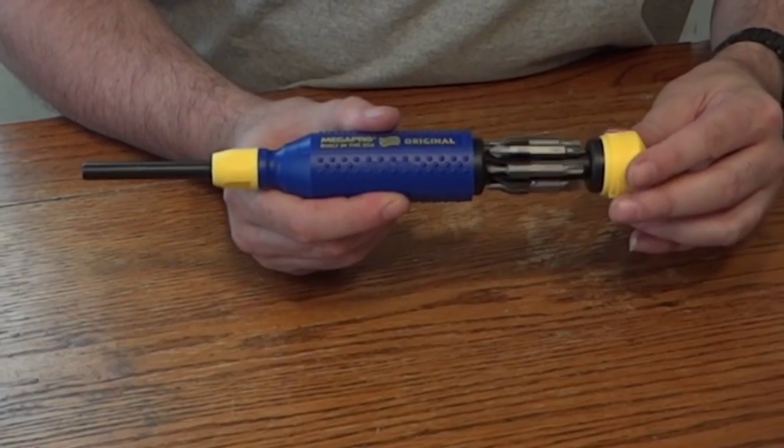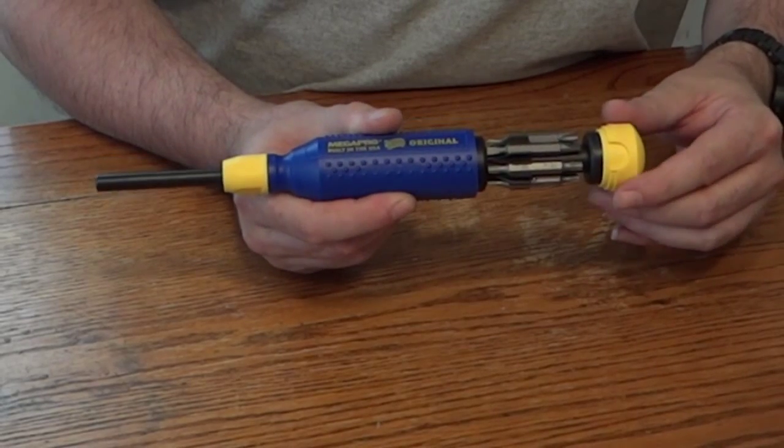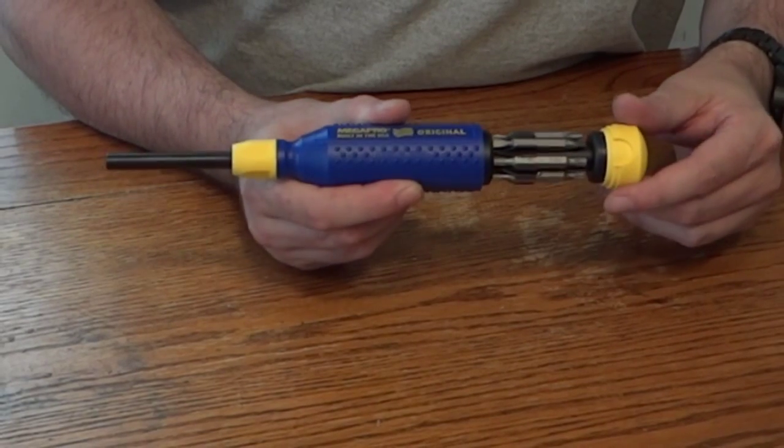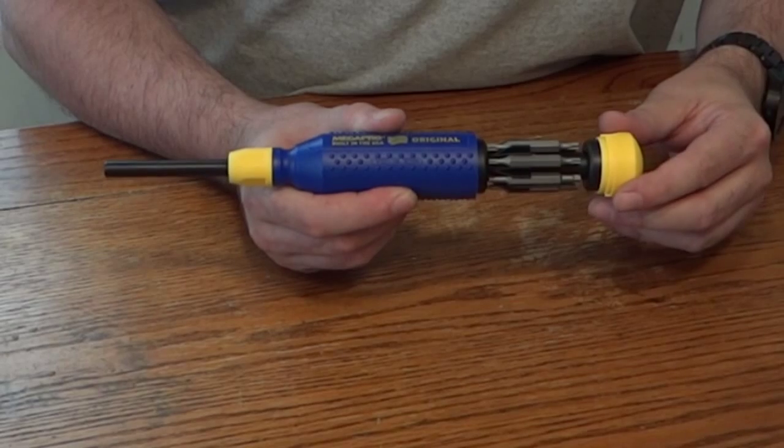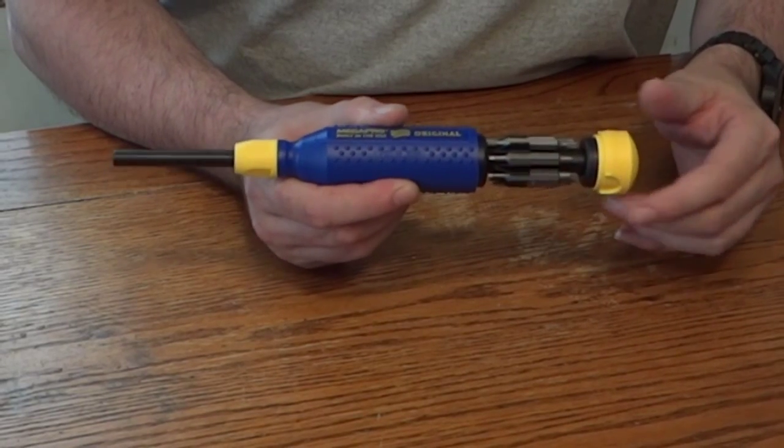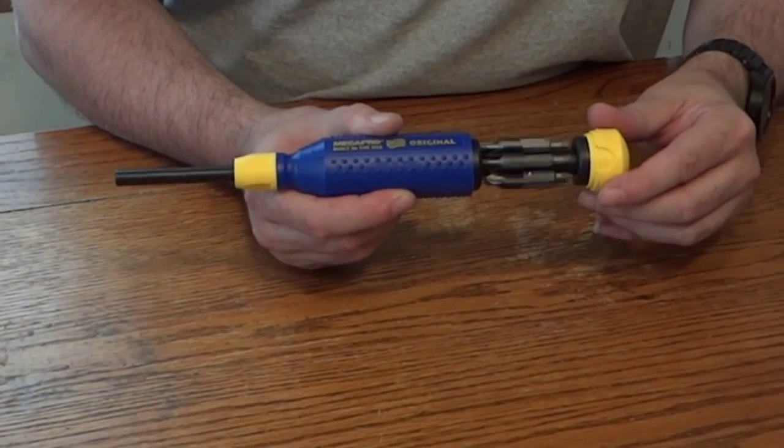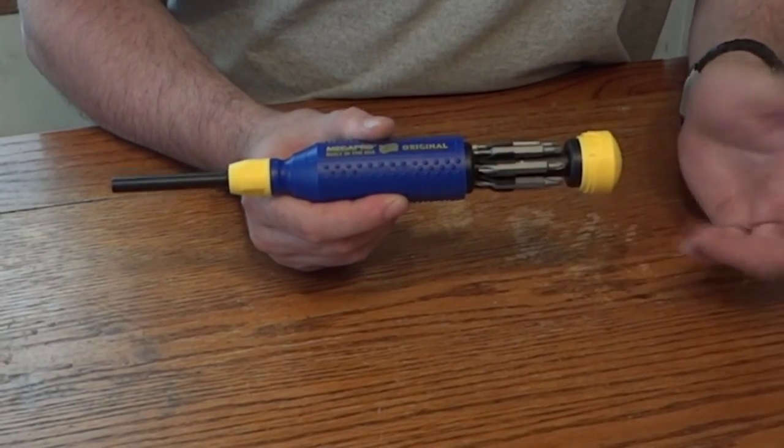There's Philips 0, 1, 2 and 3. A 4mm and a 6mm flat blade. Torx bits, we have T10, 15, 20 and 25. Robertson bits, R0, R1, R2 and R3.